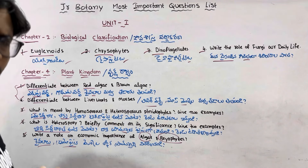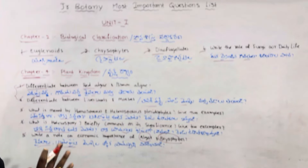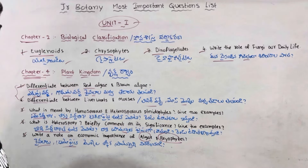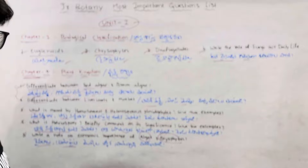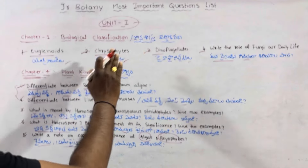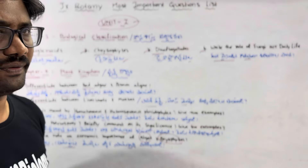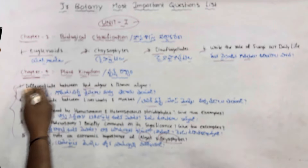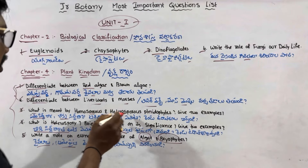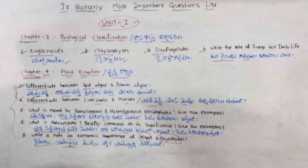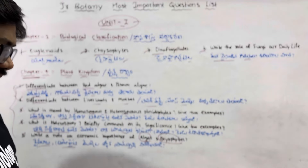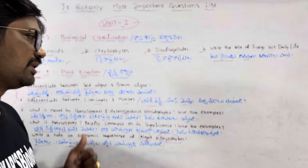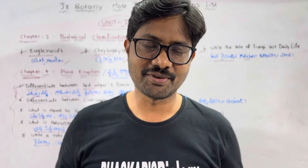To summarize Unit 1: Chapter 2 covers Biological Classification — including Euglenoids, Dinoflagellates, and the role of algae and bryophytes. Chapter 4 covers the Plant Kingdom with four marks processes. These are the most important four marks questions for the first year botany examination. Thank you very much.